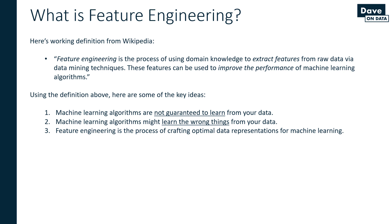Feature engineering is the process of crafting optimal data representations for machine learning. That's really what it's about — take the data at your disposal, extract features from the raw data, and present that data in such a way that the machine learning algorithm can identify the patterns in the data. Not surprisingly, feature engineering is more of an art than a science, and in particular it is an art where domain knowledge is key, especially in business analytics.